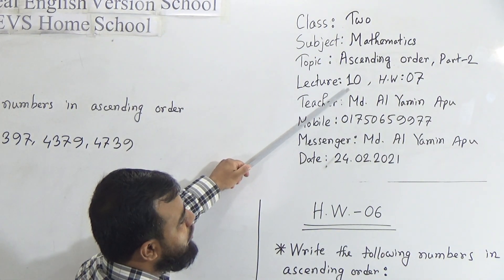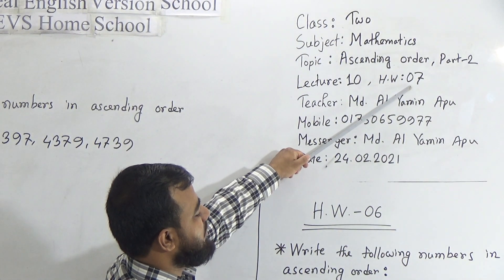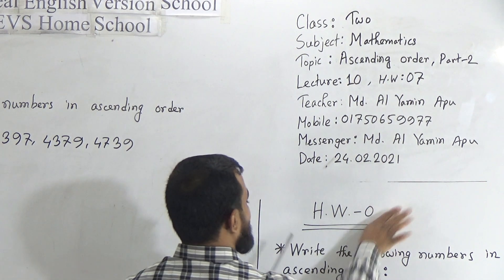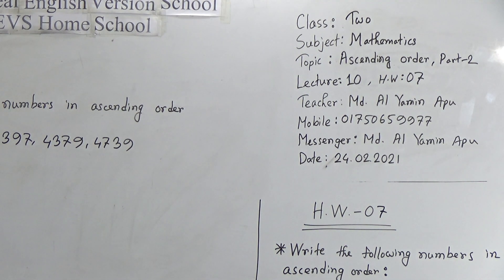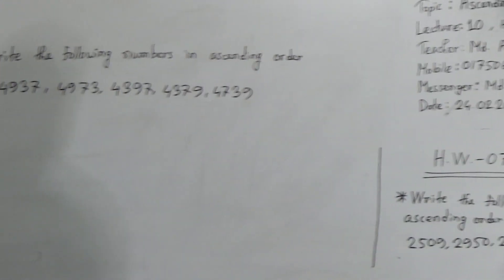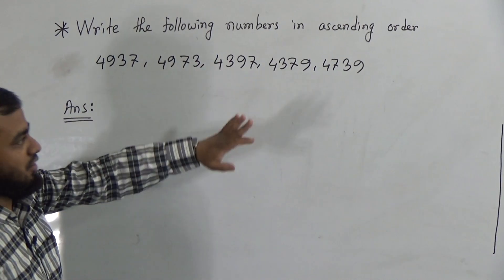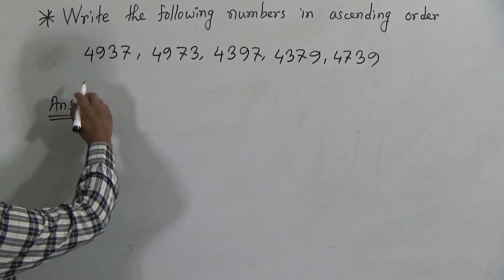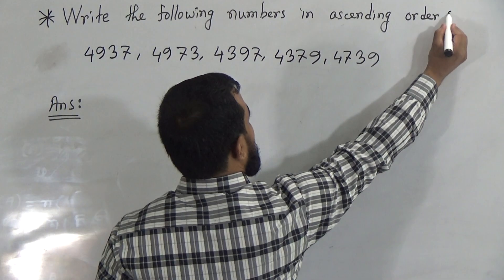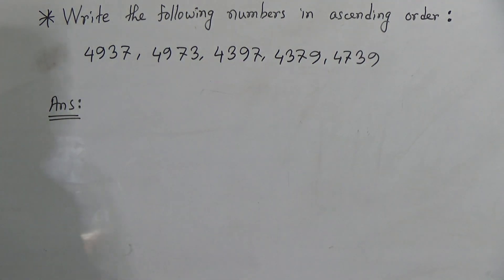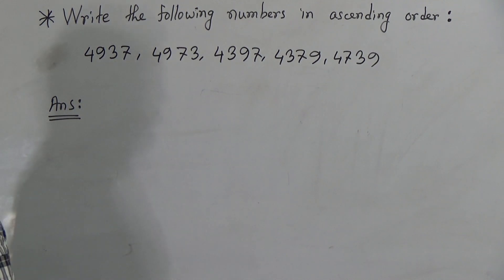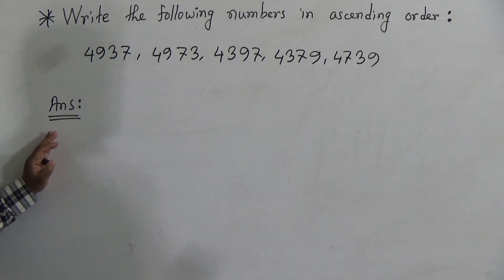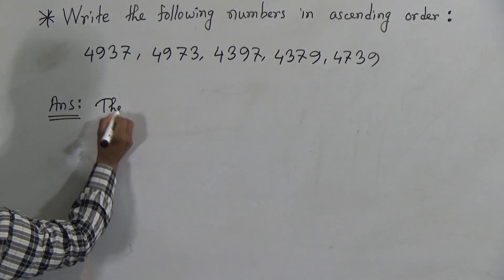Today's lecture number is 10, and you have a homework — your homework number is 7. Now I am going to solve one question today, and you will solve another question in your homework. The question is: write the following numbers in ascending order. There are five numbers given here, and we need to arrange these five numbers in ascending order. In the previous class, you have already learned how to arrange in ascending order.